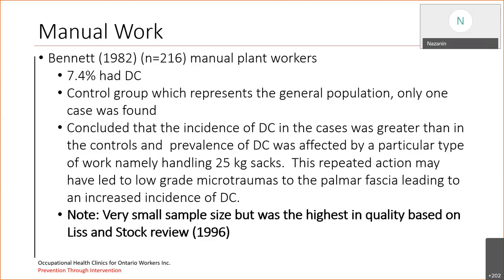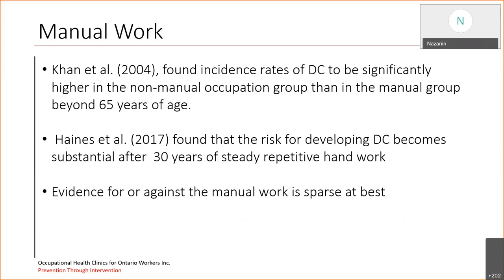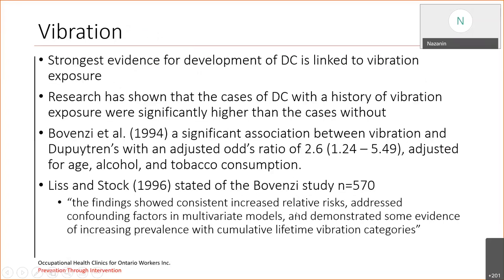The prevalence was higher because of the particular type of work — namely handling 25-kilogram sacks. Both the control and exposure groups were plant workers, but the exposure group was specifically handling 25-kilogram sacks, and this repeated action may have led to low-grade micro-traumas to the palmar fascia, leading to an increased incidence of Dupuytren's. Liss and Stock in their review noted it was a very small sample size but it was the highest quality based on their review. Controversially, one research study in 2004 found the incidence of Dupuytren's to be significantly higher in the non-manual occupation group than in the manual group beyond 65 years of age.